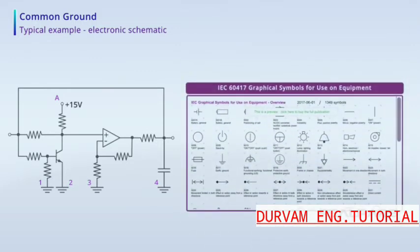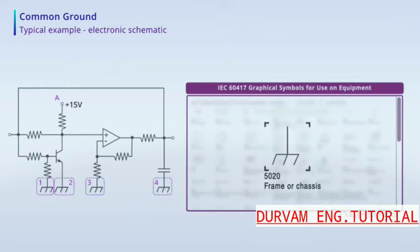If points 1 through 4 are not connected to earth ground, but are connected to a common ground, it would be more appropriate to use the symbol IEC 60417 5020. This symbol suggests the points are connected to a frame or chassis terminal.